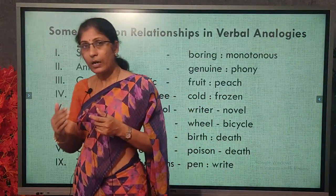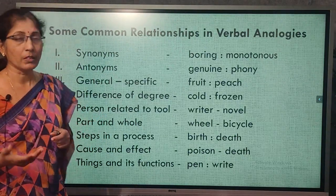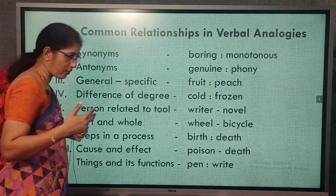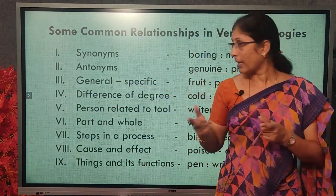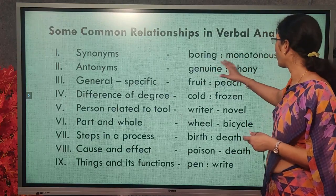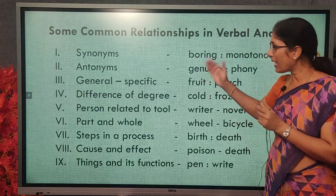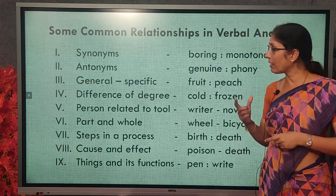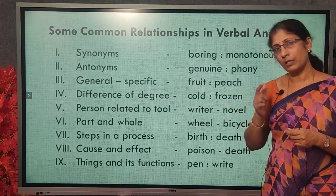Generally there are 14 types of pairs. Of course, sometimes if it is a tough or complex exam, they may go beyond that. Generally there are two types of questions: direct relation — like synonyms. The given pair 'boring, monotonous' — both are synonyms, they give the same meaning. Then there is intuitive meaning, which means you can't find the meaning directly; it is indirect.